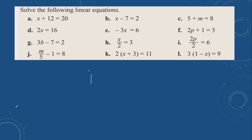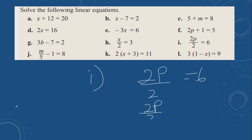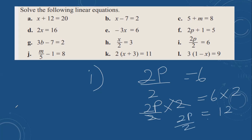Then i: 2p divided by 2 equals 6. You can multiply both sides by 2. These cancel out, giving 2p equals 12. So we can divide both sides by 2, and p equals 12 divided by 2, which is 6.